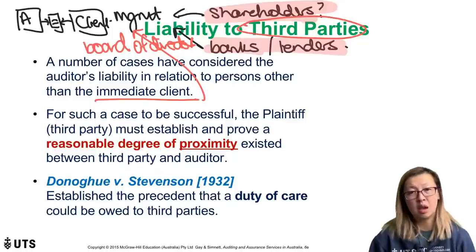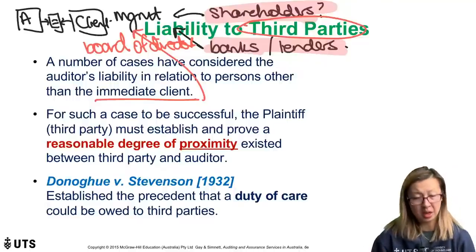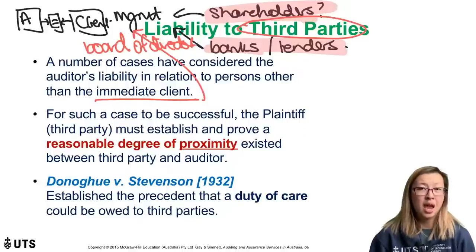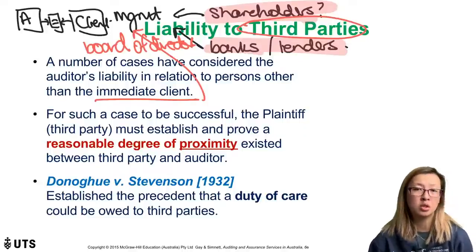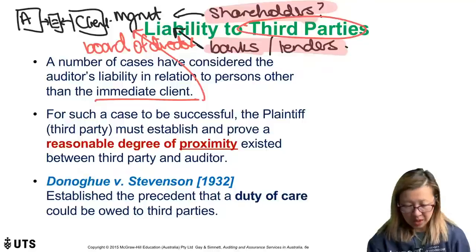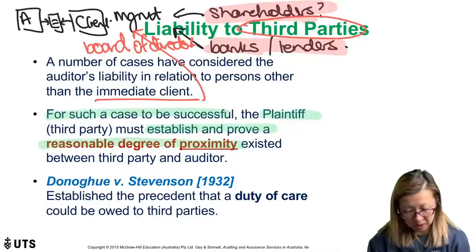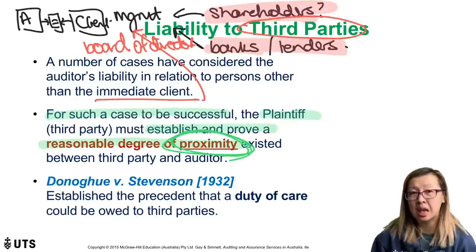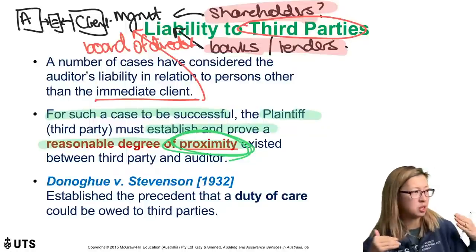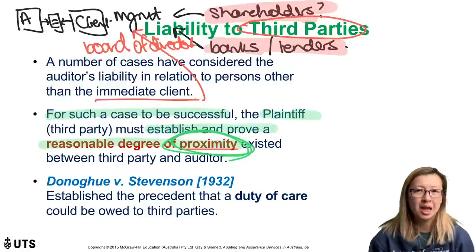There's been a lot of cases in this area because this is the hardest bit — who are we liable to? Is it shareholders, lenders, customers, suppliers? The court makes judgments on who can sue the auditor as a third party so that we have some certainty. For a case to be successful, the plaintiff — the third party — must establish and prove a reasonable degree of proximity. Proximity here doesn't mean physical distance, it means legal distance. We start with Donoghue and Stevenson — the snail in the ginger beer bottle case — where the court agreed that the manufacturer of the ginger beer owes its intended users a duty of care, and that precedent has been applied in many other areas including auditing.